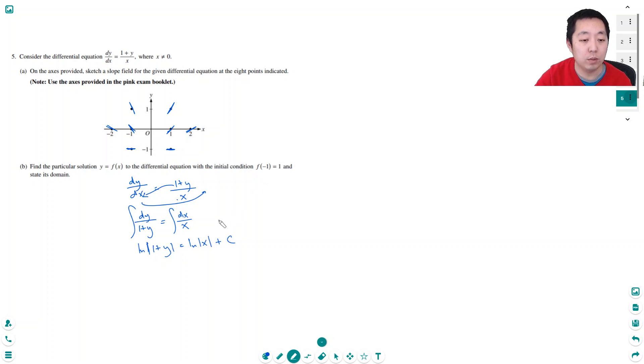So if I plug in one, so this is ln of (1+1) is equal to ln absolute value of negative one plus c. This is ln of two. That's equal to ln of one. ln of one is zero. So c is equal to ln of two. So I have ln absolute value of (1+y) is equal to ln absolute value of x plus ln of two.